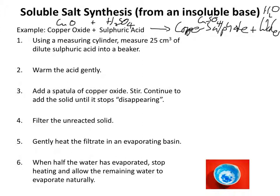Let's look at how we're going to prepare a sample of copper sulphate crystals. When describing a method in an exam, be very vigilant about using the correct equipment and describe amounts of substances. For liquids, describe volumes — we're going to use 25 cm³ of sulphuric acid, measured out using a measuring cylinder, then put in a beaker on a tripod and warmed gently with a Bunsen flame.